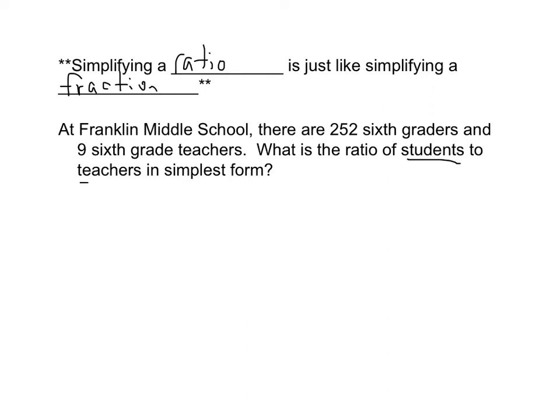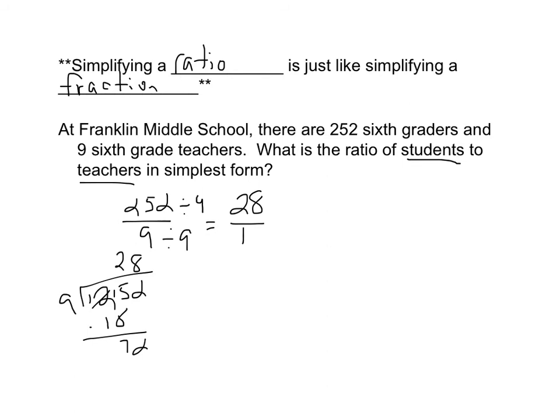Alright, so since it's students to teachers, students is going to go first. So we have 252 over nine. Now I know the trick that two plus five plus two is equal to nine, which is divisible by nine. So each of these numbers is divisible by nine, so I can simplify my fraction that way. If I do 252 divided by nine it would be 28 and nine divided by nine is one. So our ratio in simplest form would be twenty-eight students to one teacher.